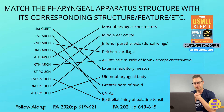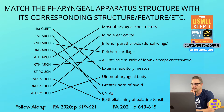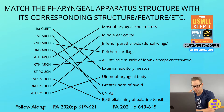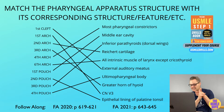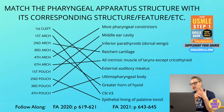The sixth arch vascular derivative also differs right to left — remember, there's no fifth. The right gives us the proximal portion of the pulmonary arteries, while the left gives us the ductus arteriosus. The associated nerve is the recurrent laryngeal branch of the vagus nerve. This innervates the intrinsic muscles of the larynx except for one — the cricothyroid. Sensation from the recurrent laryngeal branch includes taste from the epiglottis and pharynx, and general sensation in the larynx, pharynx, esophagus, tympanic membrane, external auditory meatus, and part of the external ear.